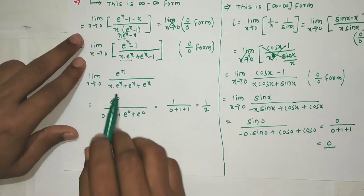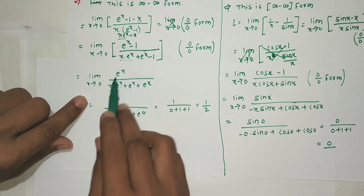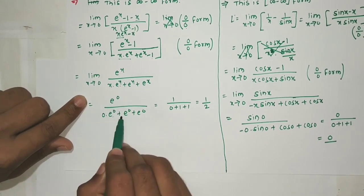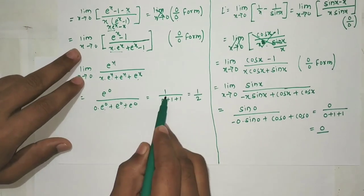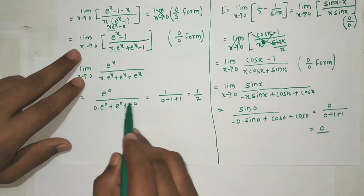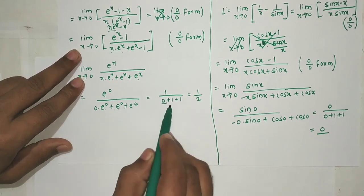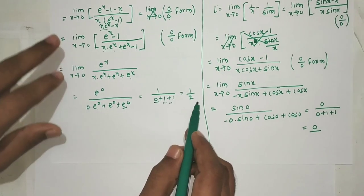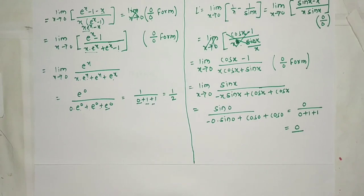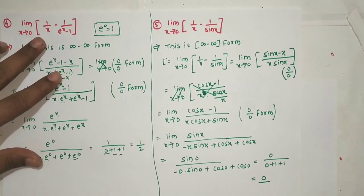Second application: derivative of (eˣ - 1) is eˣ; derivative of (x·eˣ + eˣ - 1) is (eˣ + x·eˣ + eˣ) = x·eˣ + 2eˣ. Putting x=0: numerator = e⁰ = 1; denominator = 0·1 + 2·1 = 2. So our final limit is 1/2.